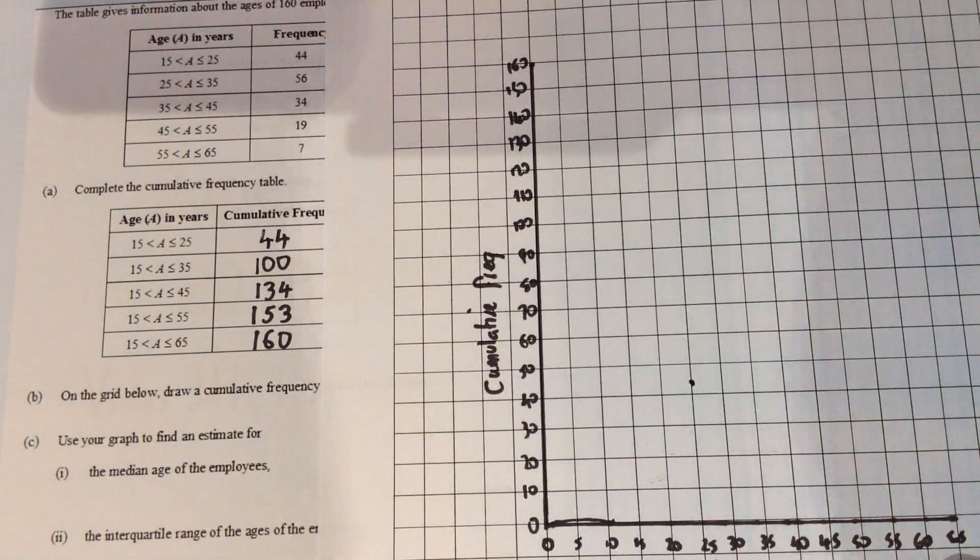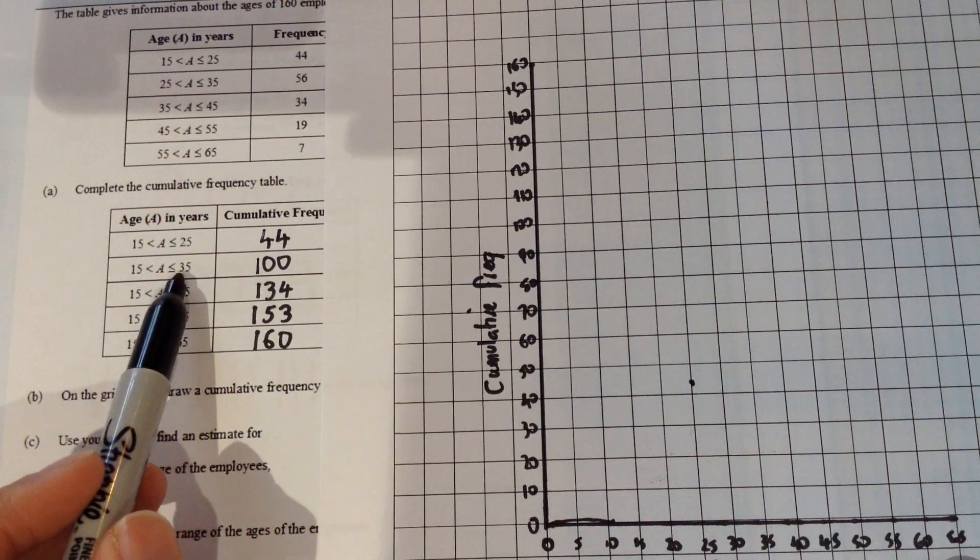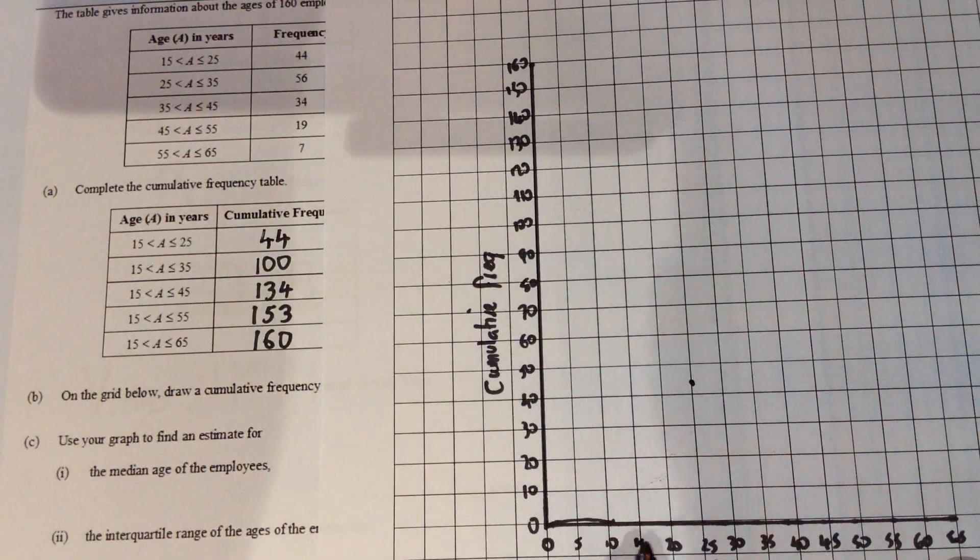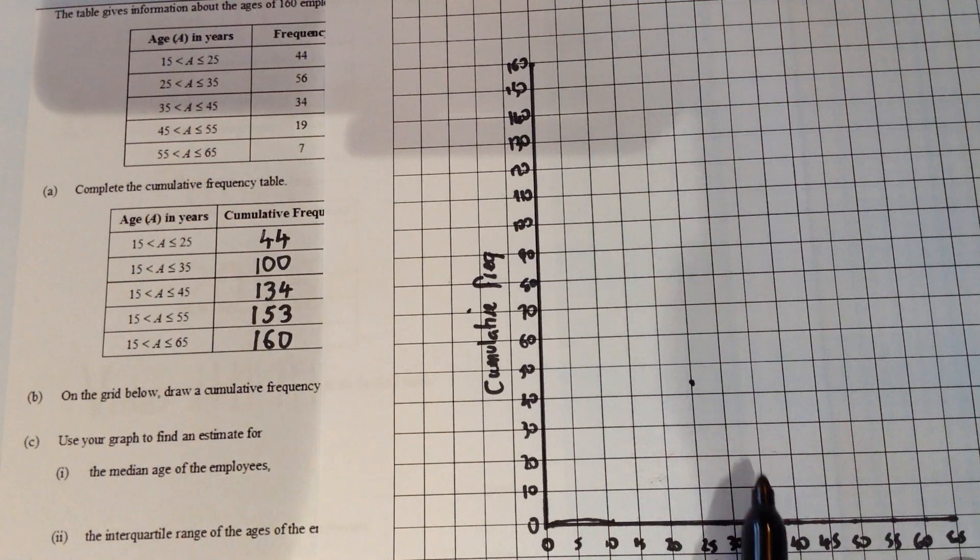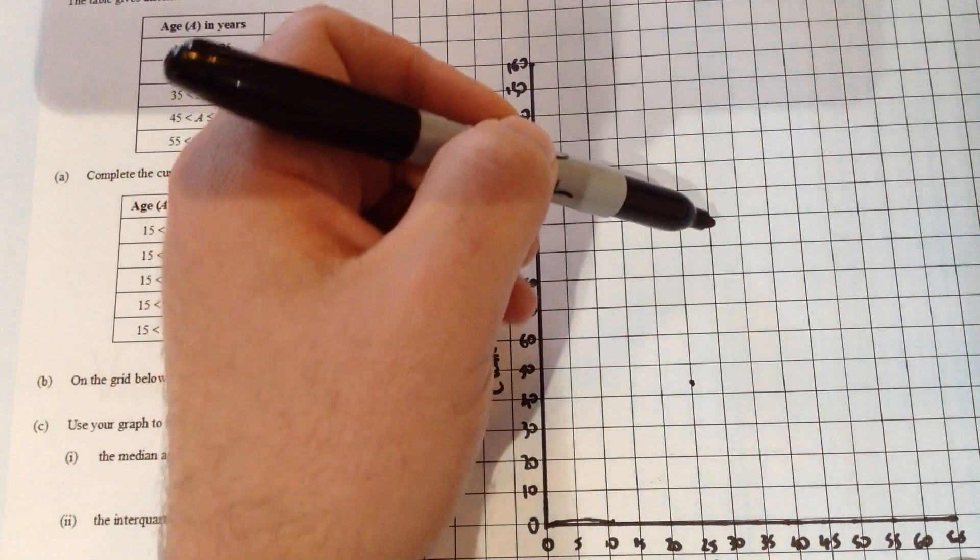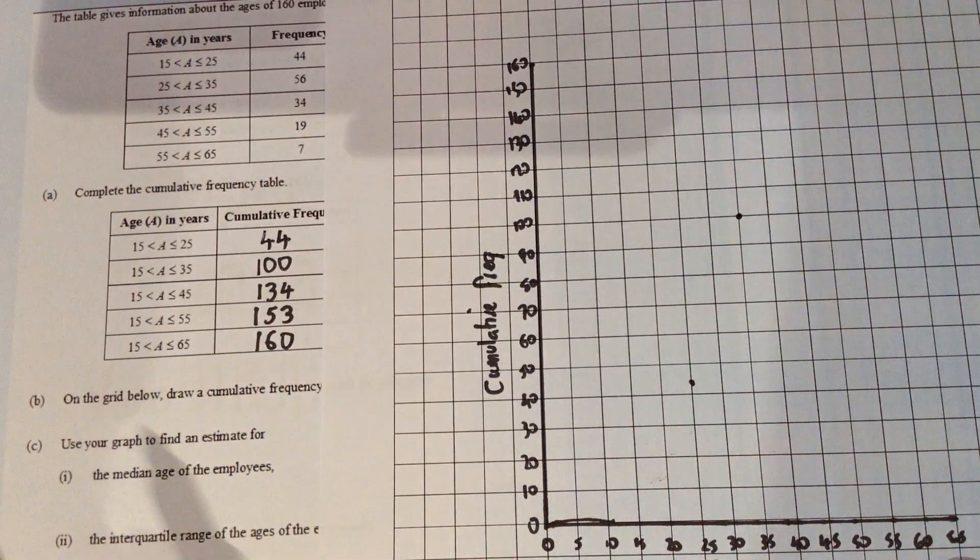Put yourself a small dot, small marks you can see that one. The next group goes up to 35, so we go to 35 on the age section at the bottom and then up to 100. So 100 is here, we put ourselves a dot where those meet up.